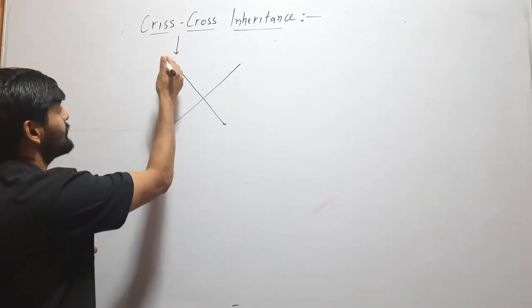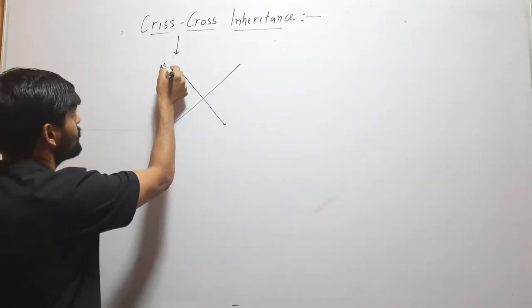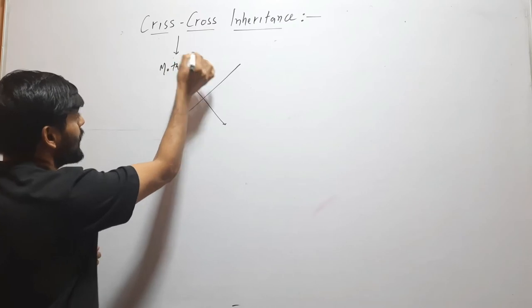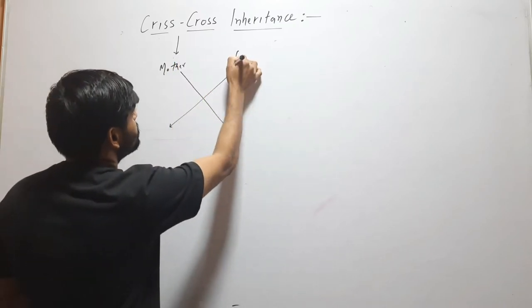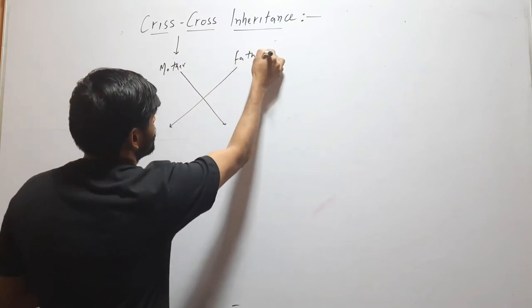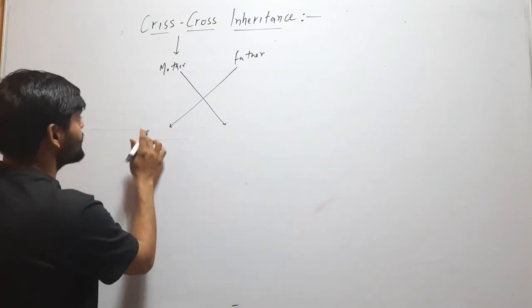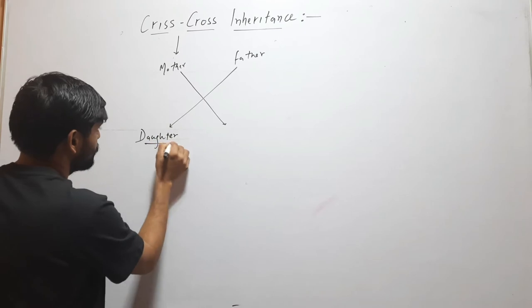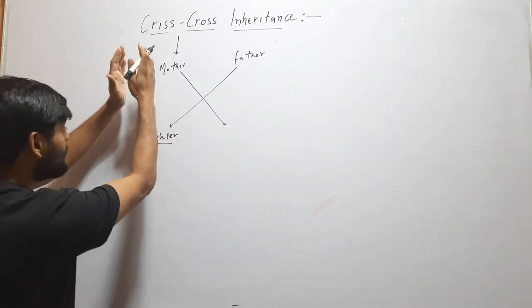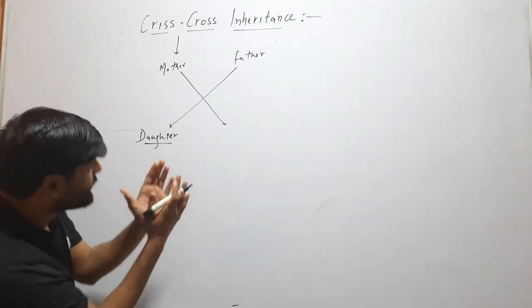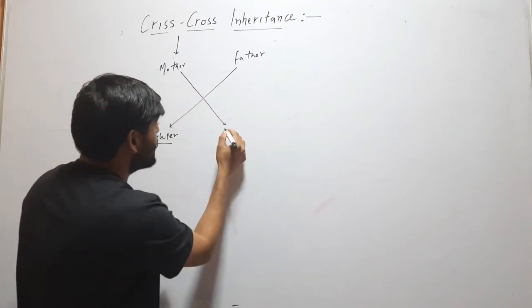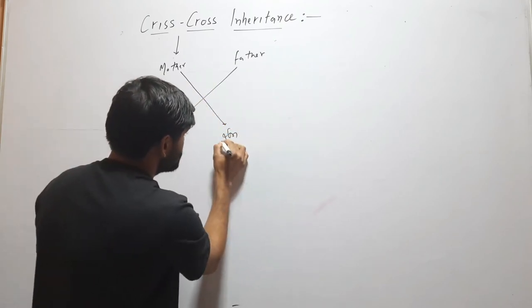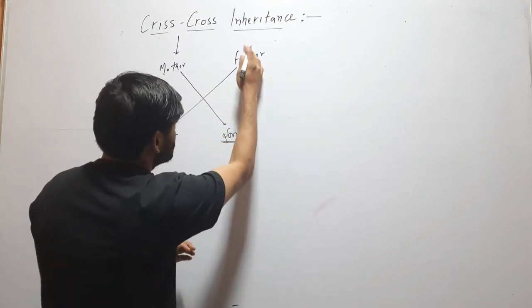Here I am writing mother and here I am writing father. Below mother, I am writing daughter because both are female. I am taking female on one side and male on another side. Son on this side and father on this side.